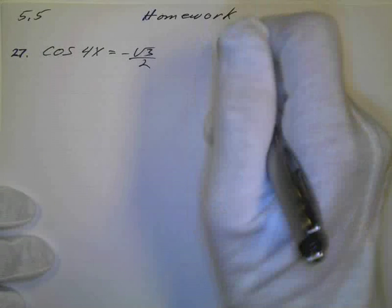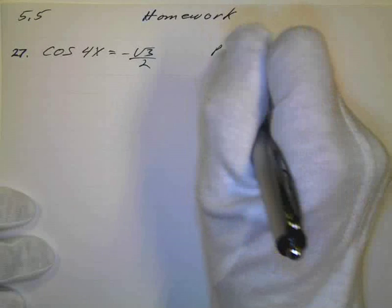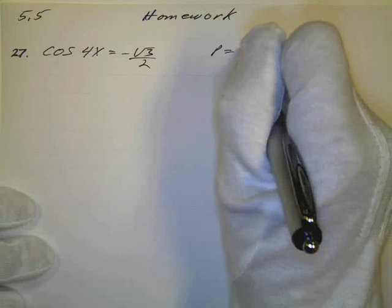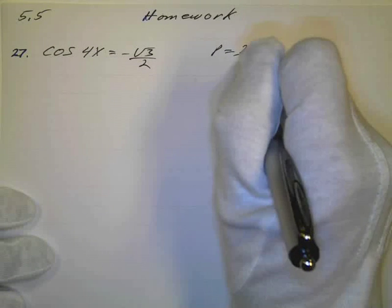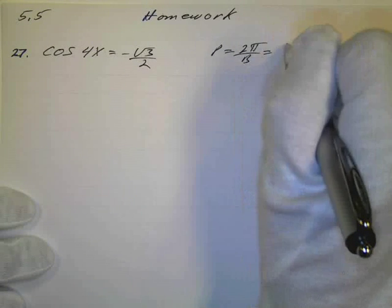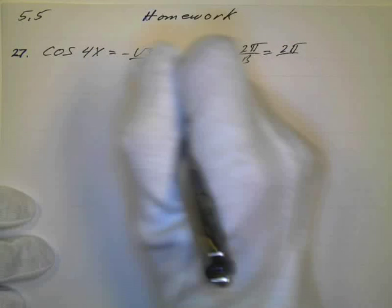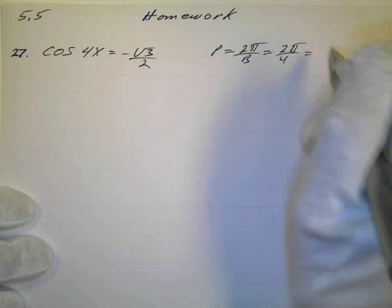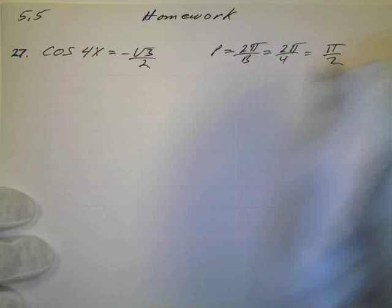And again, we want to see what the period is so we can get an idea of what's happening. So remember the period equals 2π over b, which is going to be 2π in this case over 4, which is going to end up being π over 2.